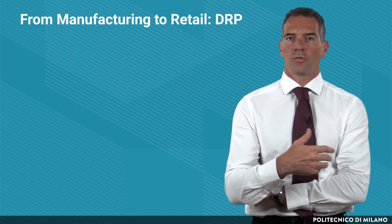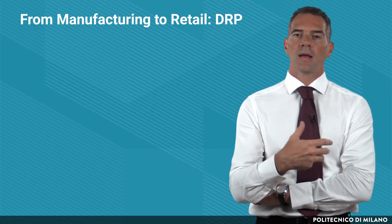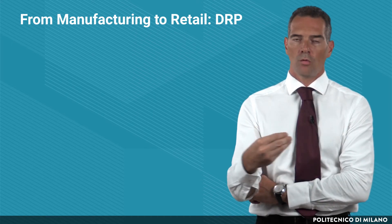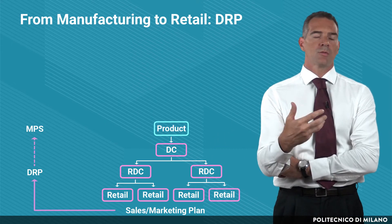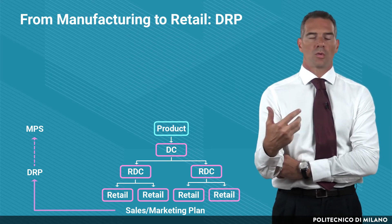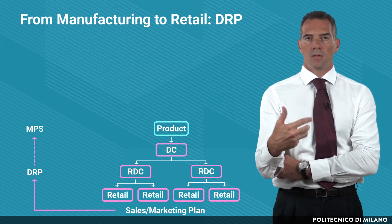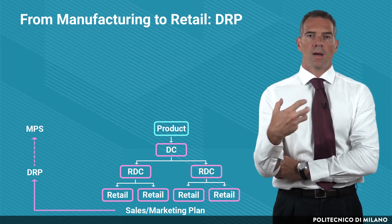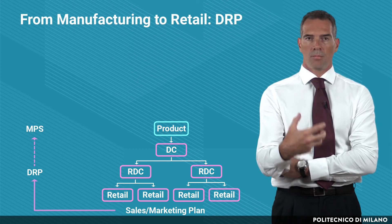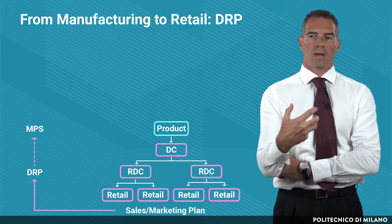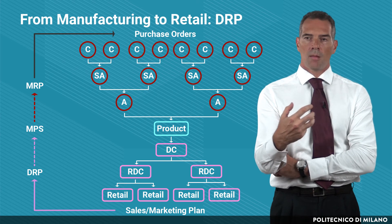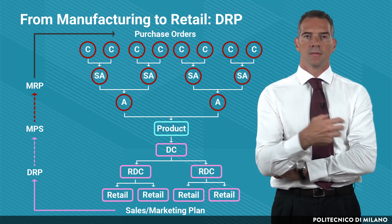The MRP procedure was designed for manufacturing environments and follows a very analytical approach, computing the requirements of all components from a single finished product. In subsequent years this approach was adapted also to distribution with the so-called DRP — Distribution Requirement Planning — in which demand for the same item from multiple stores can be aggregated and put back in time to determine the overall demand at the main distribution center. By connecting DRP with MRP, the whole supply chain can be planned. In the next lecture, we will see an application example of this procedure.